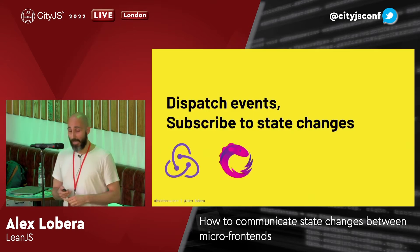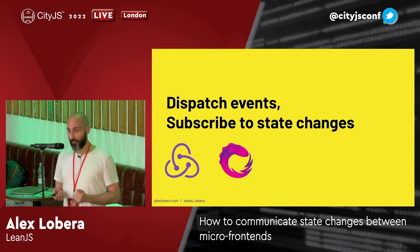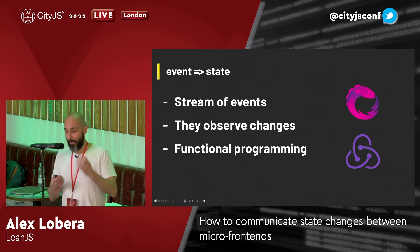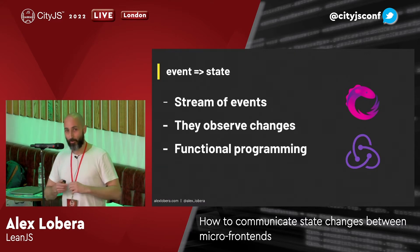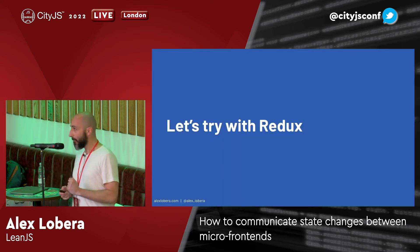So let's try a different approach. We're going to dispatch events, but subscribe to state changes — not to events. This is the architecture of Redux and RxJS. It's basically the same idea: you have a stream of events or actions, things that happen over time, and you observe changes. You can add a bit of functional programming — pure functions or reducers — to program things and make things happen. So let's try again, but now with Redux.